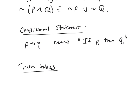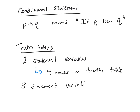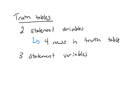From there, we looked at truth tables. A reminder: if you have two statement variables, your truth table will contain four rows. If your statement has three variables, then your truth table will contain eight rows.